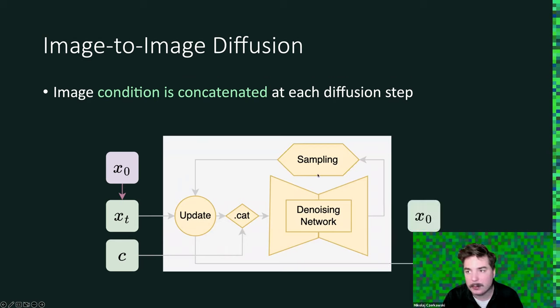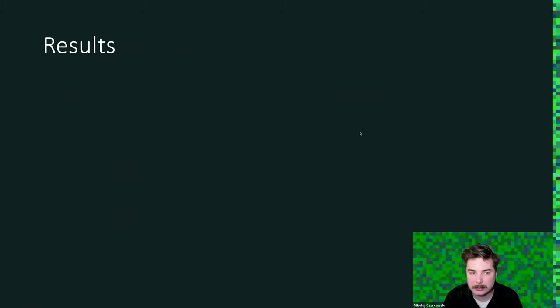And then we will perform sampling. And at the end of the sampling, we will get our x_0. So by following this simple mechanism, we can actually train image-to-image translation models.